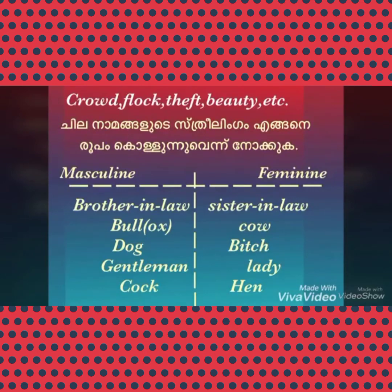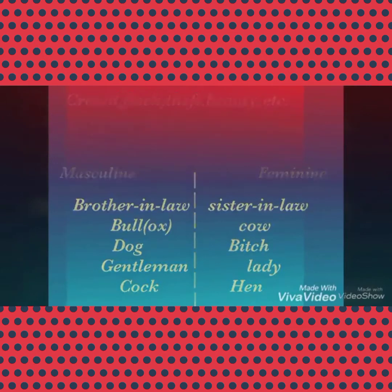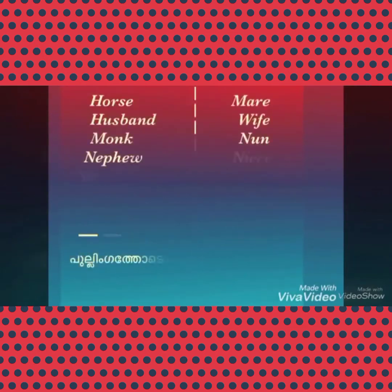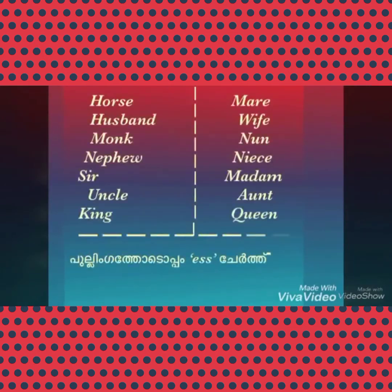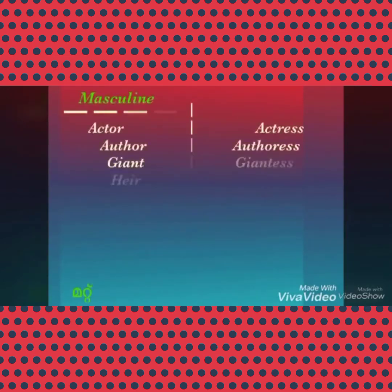Now we come to masculine and feminine gender pairs — let's see in detail. What is the feminine of brother-in-law? Yes, it's sister-in-law. Bull / Cow, Horse / Mare, Husband / Wife, Monk / Nun, Nephew / Niece, Sir / Madam, Uncle / Aunt, King / Queen. Students, try learning them so that you may understand the concept much better.